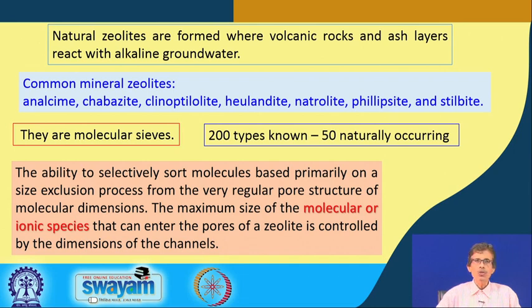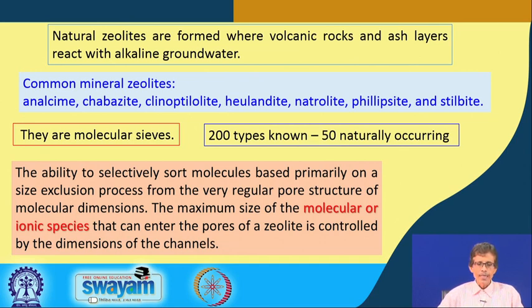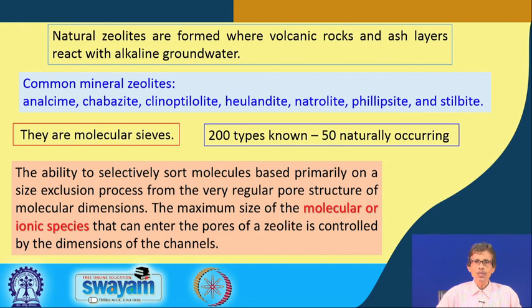The ability to selectively sort different molecules is why we call it a molecular sieve - it is some kind of filtering mechanism in terms of the molecular sizes, and if it is dependent on different sizes we can think of it as a size exclusion type. Selectively they can sort or identify the molecule based primarily on a size exclusion process - which are bigger can be retained and which are smaller can pass through that particular zeolite material, from the very regular pore structure of molecular dimension. We can have a very good pore structure such as to trap methane or ethane inside the pores of the zeolites, and in all these cases the maximum size of the molecular or ionic species that can enter the pores is controlled by the dimension of the channels.